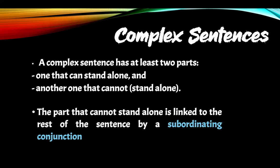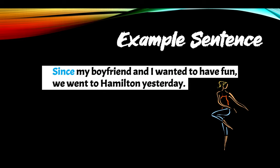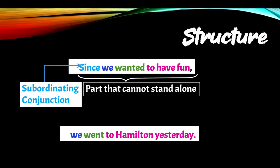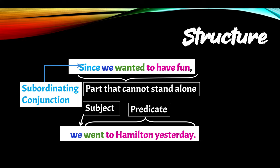Complex sentences. A complex sentence has at least two parts: one that can stand alone and another one that cannot stand alone. The part that cannot stand alone is linked to the sentence by a subordinating conjunction. For example: since my boyfriend and I wanted to have fun, we went to Hamilton yesterday. Since is a subordinating conjunction. Subject: we. Predicate: went to Hamilton yesterday. So the part that cannot stand alone starts with a subordinating conjunction, and the other one is called an independent clause because it can stand alone.